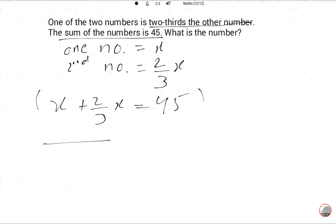We will take LCM. 3X plus 2X is equal to 45. So 5X upon 3. 3 will cross multiply, 45 multiplied by 3. So X is equal to 45 multiplied by 3 upon 5. So 5 and 45 will cancel each other.